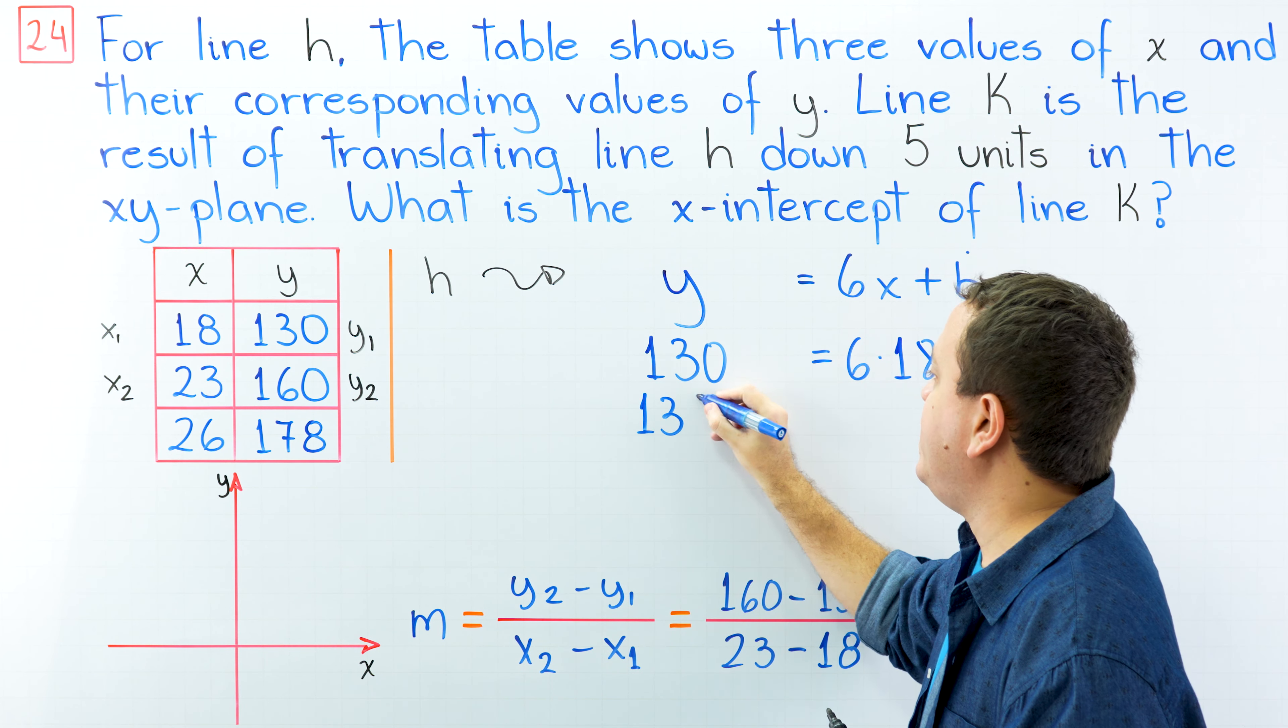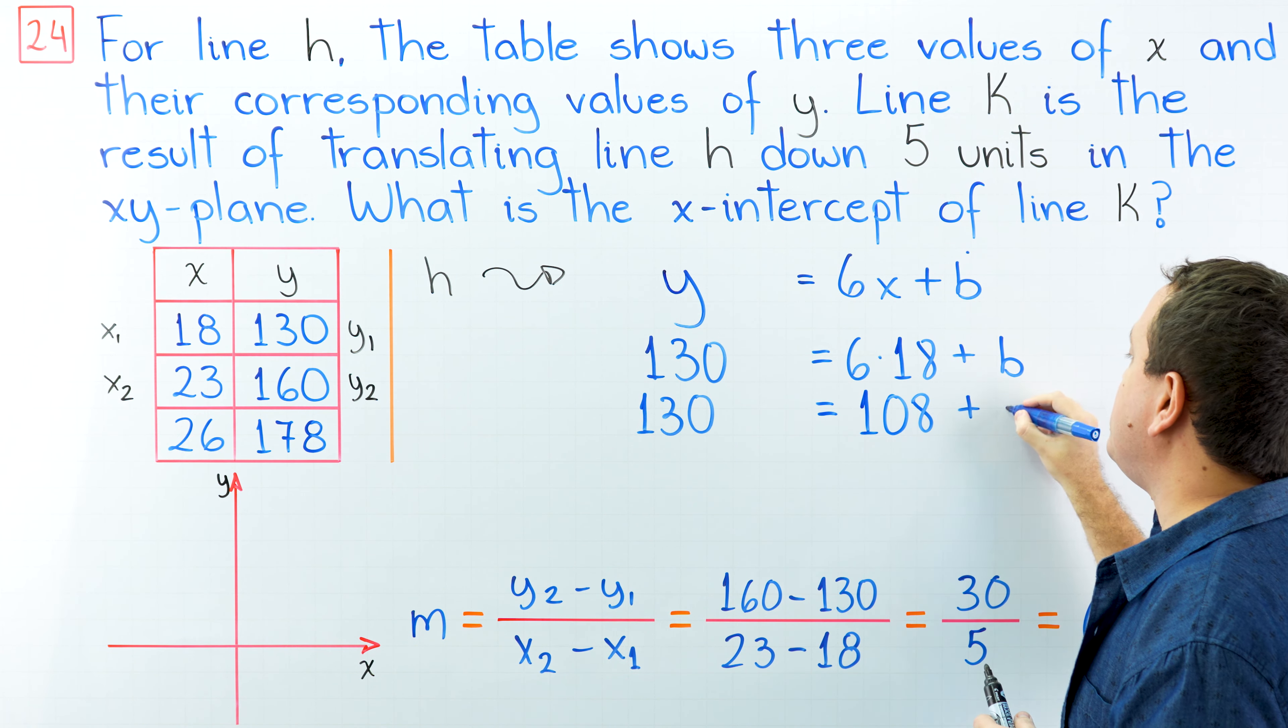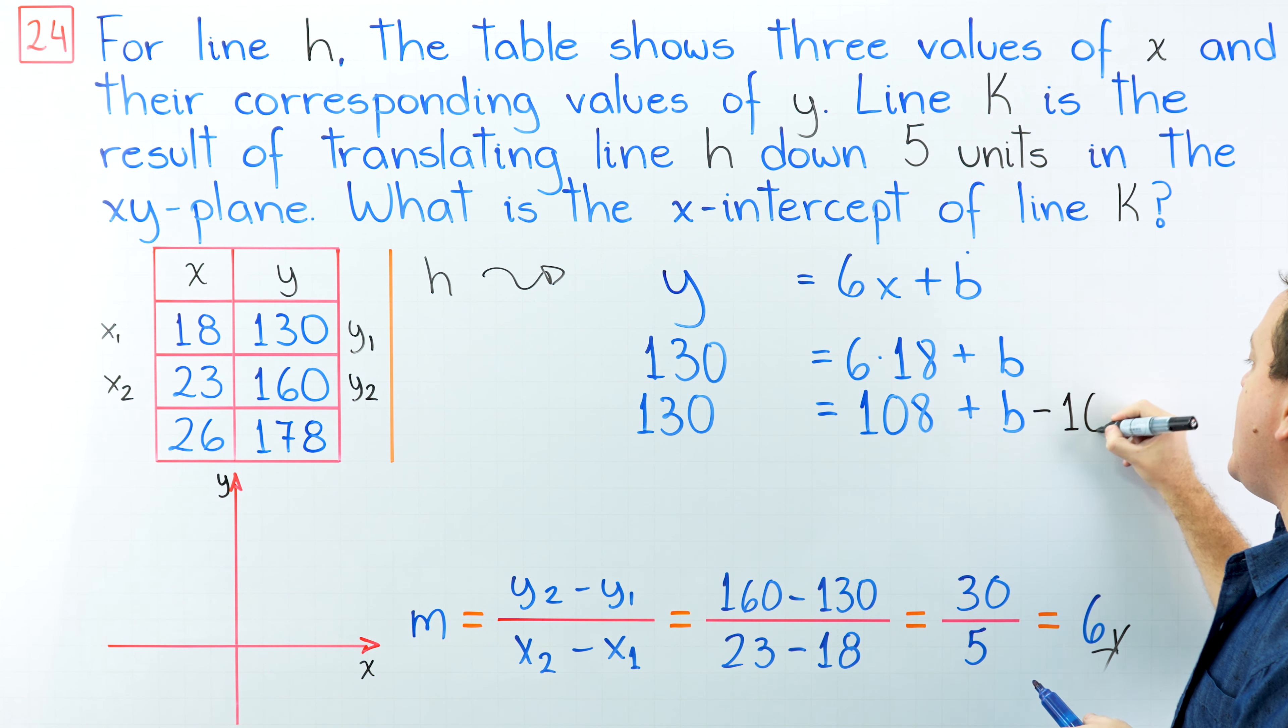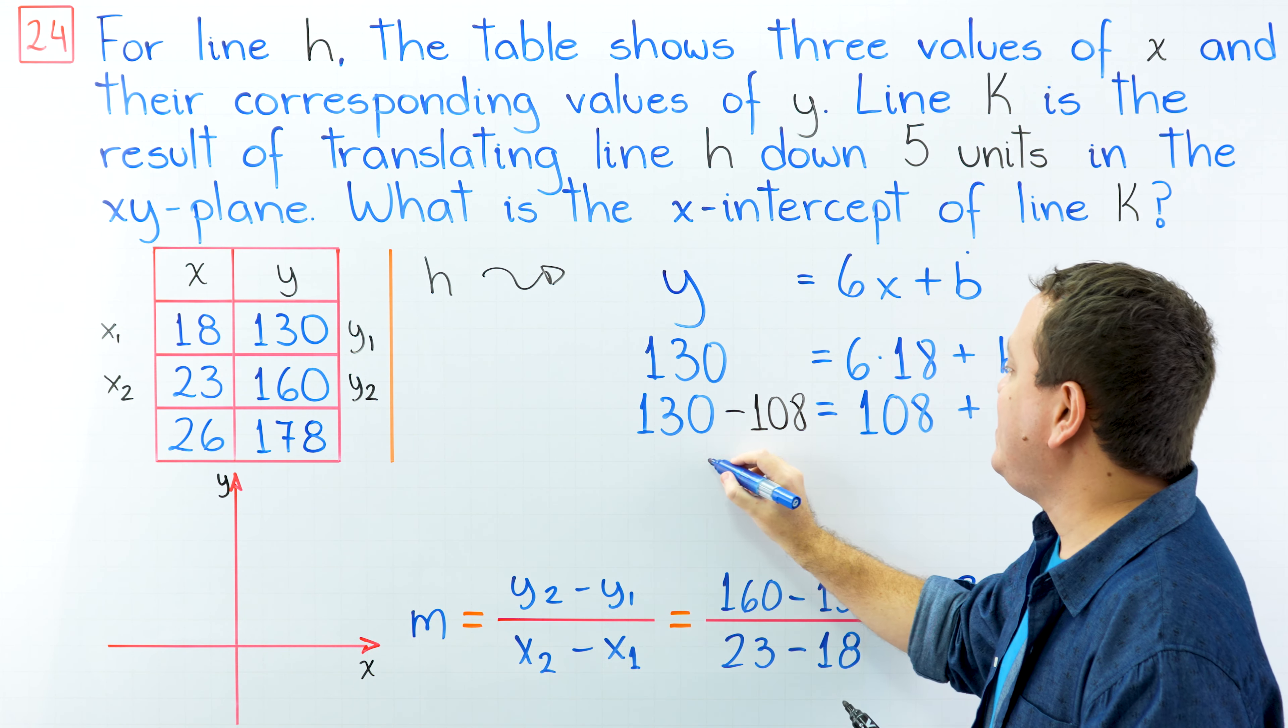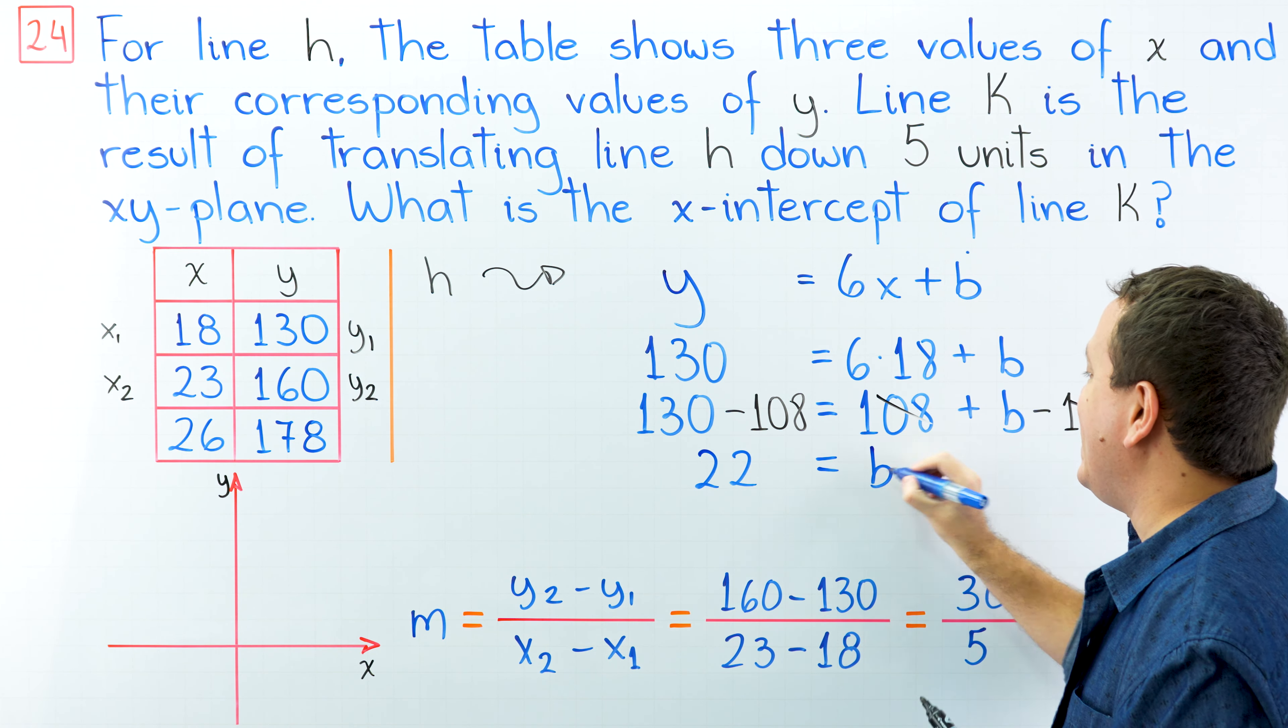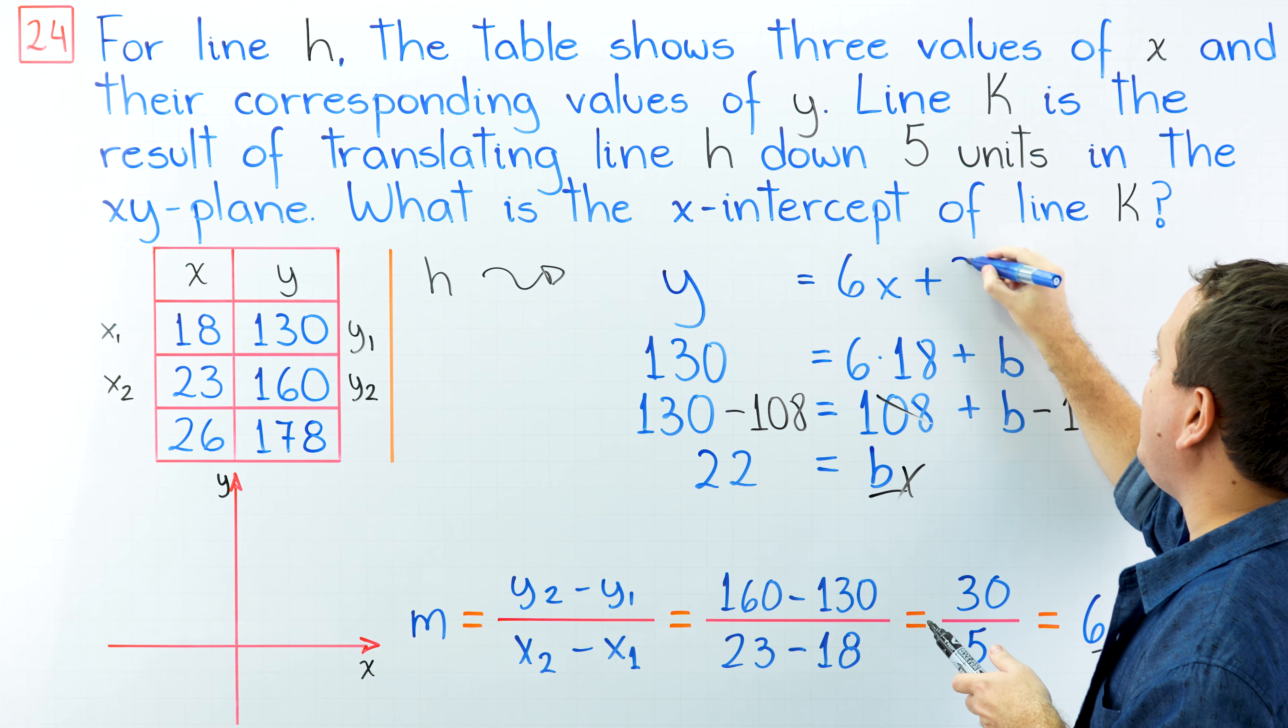130 is equal to 6 times 18 is 108 plus b. And then we're going to subtract 108 from both sides. 130 minus 108 gives us 22, and this is equal to b. Now the value of b is 22 and we're going to replace that value in here.